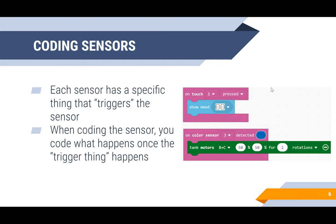When coding sensors, each sensor has a specific thing that triggers it. That outside trigger — like someone touching the sensor — causes the sensor to do something. So when you're coding the sensor, you code what happens once that trigger event occurs.